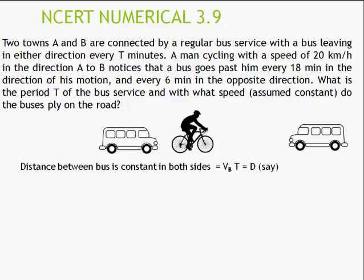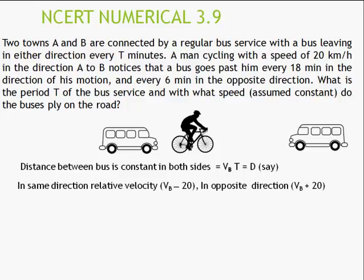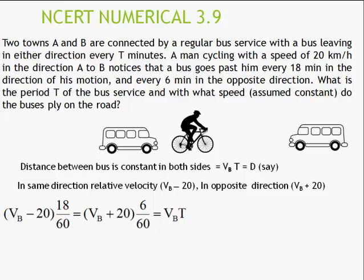Let the distance between buses be D = V_B × T. When the cyclist travels in the same direction as the bus, relative speed is V_B − 20, and they meet every 18 minutes. When traveling in the opposite direction, relative speed is V_B + 20, and they meet every 6 minutes. Both these distances equal D = V_B × T. Using the first two equations together (ignoring the third for now), we get V_B = 40 km/h. That is the answer for the velocity of the bus.